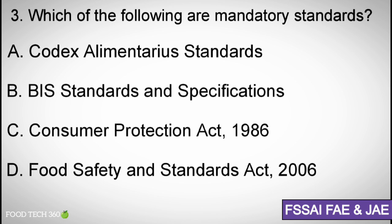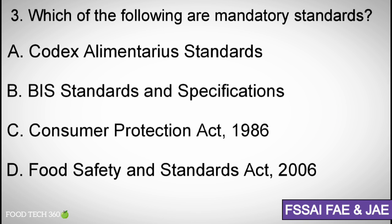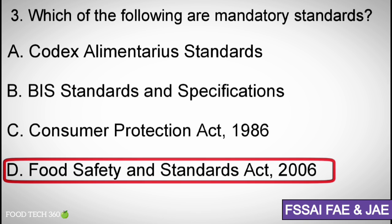Question number three: Which of the following are mandatory standards? Options: A) Codex Alimentarius standards, B) BIS standards and specifications, C) Consumer Protection Act 1986, D) Food Safety and Standards Act 2006. Correct answer: D) Food Safety and Standards Act 2006.